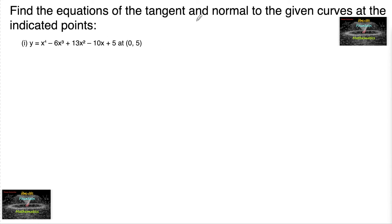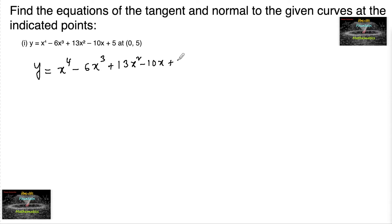Find the equations of the tangent and normal to the given curves at the indicated points. The given curve is y = x⁴ - 6x³ + 13x² - 10x + 5, and at the point (0, 5) we have to find the tangent and normal. Since we know that tangent and normal are both perpendicular to each other.